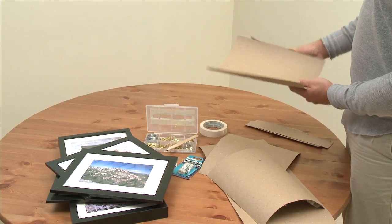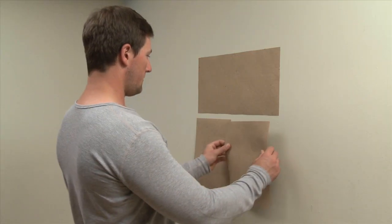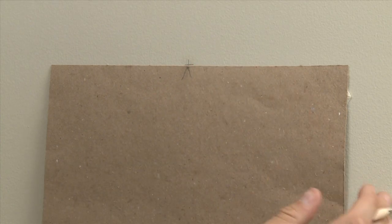Start by making a cardboard template of the picture. Put loops of masking tape on the back. Now you can easily move the template around until you're satisfied with the layout. Mark the wall at the top and center of the template.